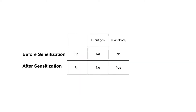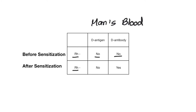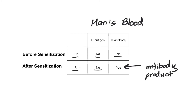Let's look at what happens in mom's blood before and after sensitization. Before sensitization, an RH negative mother will not have any D antigens on the surface of her red blood cells, and she will not have any antibodies against D antigen. But after sensitization, mom again does not have any D antigen on the surface of her red blood cells, but now has antibodies against the D antigen, produced as a result of being exposed to this foreign antigen.